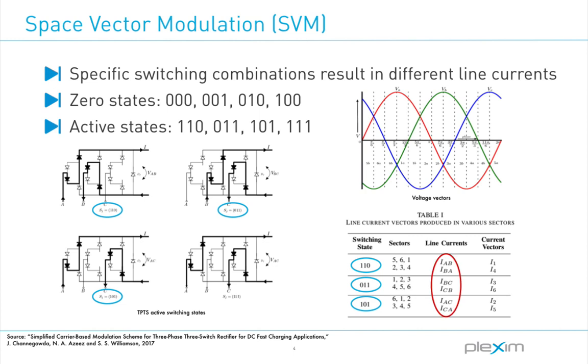If all three switches are on, the current flows through only two legs of the TPTS, depending on the position of the voltage vector, thus making one of the active phases redundant.